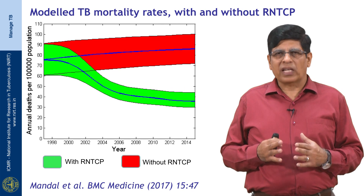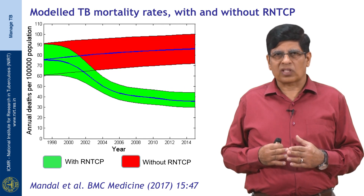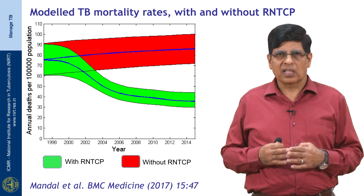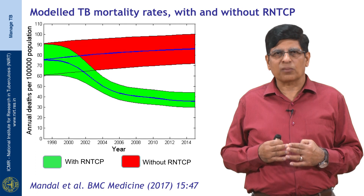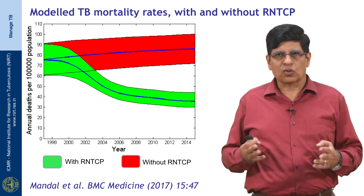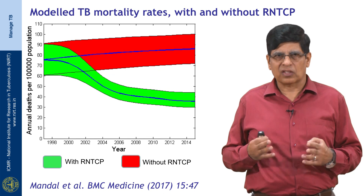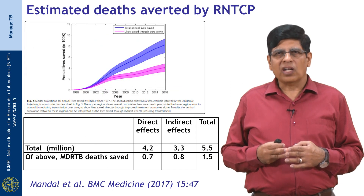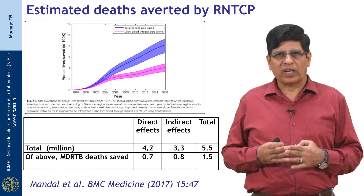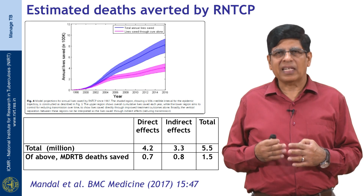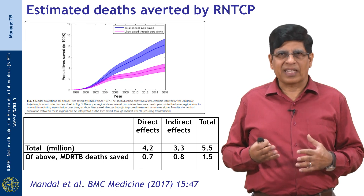A modeling output shows that without RNTCP, mortality rates — represented by the red band — would have increased over the years. RNTCP helped decrease the mortality rate per 100,000 population from about 75 when RNTCP started to about 34 in 2015 — more than a 50% reduction. This resulted in saving 7 million deaths: 5.5 million from drug-sensitive TB and 1.5 million from MDR-TB, with 40% of this reduction due to the indirect effect of reducing transmission through higher cure rates.